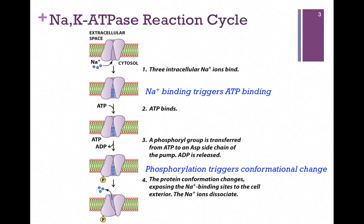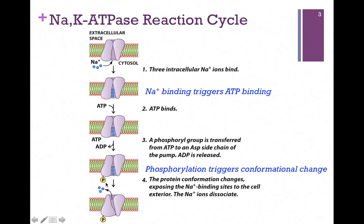It works by a similar rocker mechanism that we saw in the glucose transporter, but remember, that was an example of facilitated transport — it didn't cost us any energy, but in this case it does. Here's our transporter at the top of the screen, and you can see that the pore is open to the inside of the cell. We're going to bind three sodium ions; they'll fit perfectly in that little pocket, and that will trigger the binding of an ATP molecule. The transporter rapidly transfers a phosphoryl group from ATP to the cytoplasmic domain of the transporter, and we release ADP. This transfer of a phosphoryl group is referred to as phosphorylation, and that triggers a conformational change, causing our transporter to rock to the other side so now our pore is facing the outside of the cell, and we release those sodium ions.